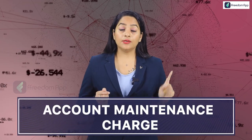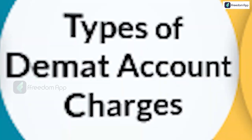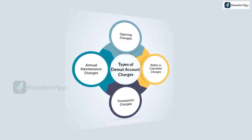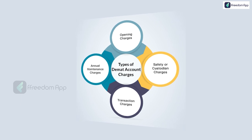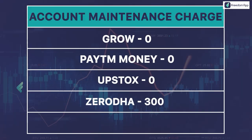The second charge is the Account Maintenance Charge. Once you have opened an account with a specific platform, you have to pay an annual maintenance charge. This is mandatory and differs from platform to platform. For example: Grow, Paytm Money, and Upstox charge 0, while Zerodha charges ₹300 and Angel One charges ₹240 per year.